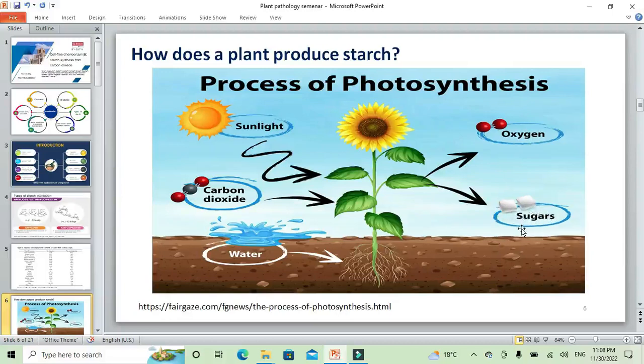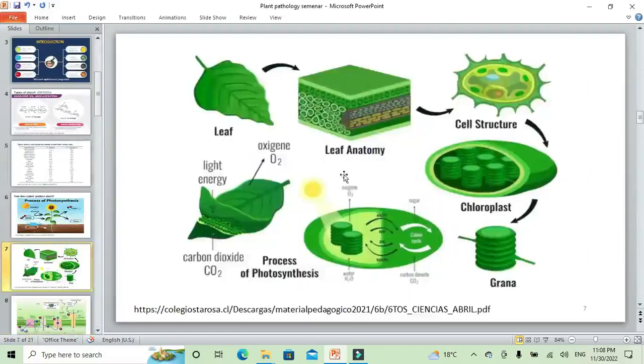Glucose can be converted to starch in the Calvin cycle as we will see. You see here in brief, this is the leaf. When we take a section in this leaf to see the cell structure, you will see the chloroplast. Inside the chloroplast, there are thylakoids. A group of thylakoids consists of the grana. Between the grana, there is the stroma.